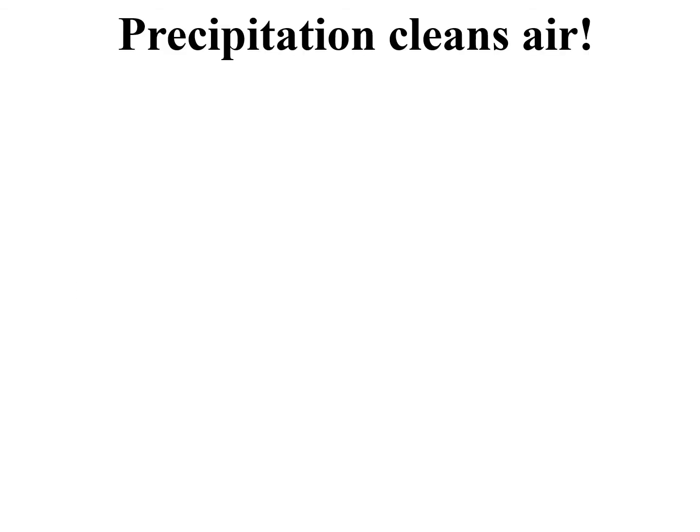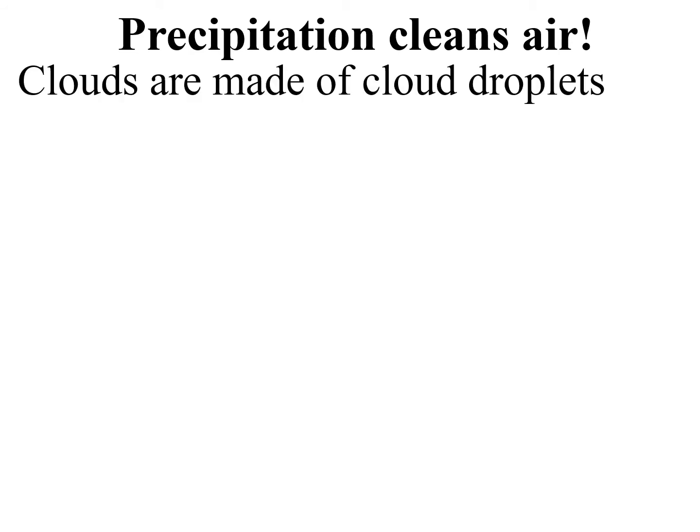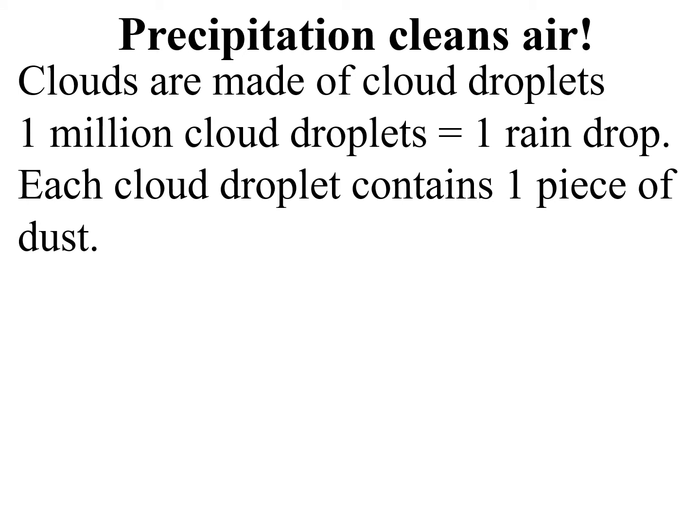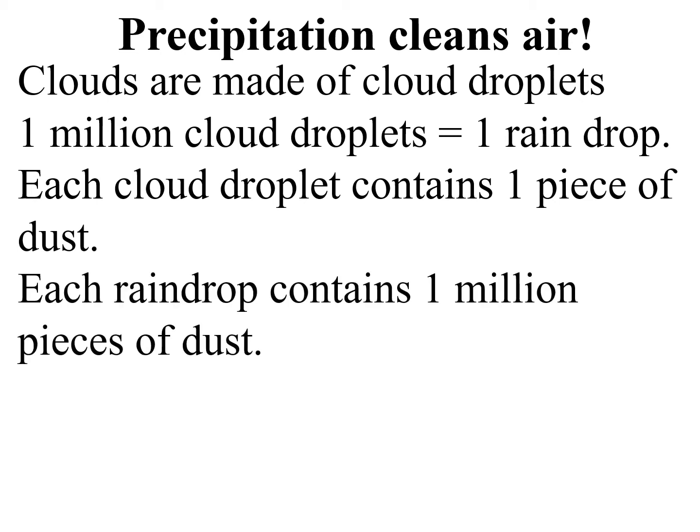Precipitation cleans the air. A lot of times people think it's because the rain is coming through air and that'll clean the air, and maybe that happens a little bit. But what really happens is this: the clouds are made of cloud droplets. One million cloud droplets equals one raindrop. So each cloud droplet contains one piece of dust. Each raindrop, therefore, contains one million pieces of dust. So sure enough, rain cleans the air.